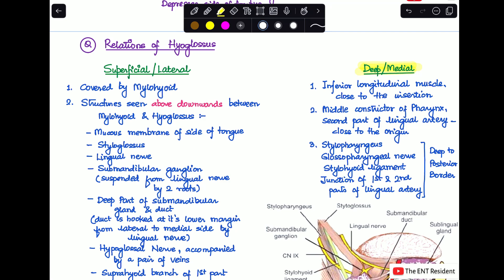The deep or the medial relations are: the inferior longitudinal muscle, which is close to the insertion; the middle constrictor of pharynx; and the second part of lingual artery, which is close to the origin.